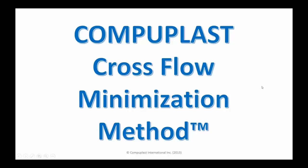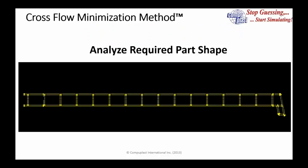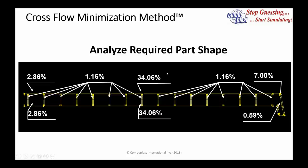We recommend a method called the cross-flow minimization method — basically delivering the right amount of material to each section of the die throughout the whole die. We analyze the required final part shape and break it into sections. Each vertical wall requires about 1.16% of total flow, the large horizontal walls top and bottom each require about 34%, the edges require approximately 3% on top and bottom of each side, and about 7% at one end.